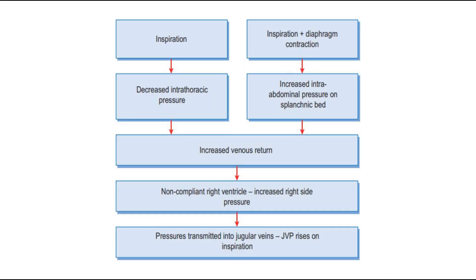This flow chart shows the mechanism of Kussmaul's sign. When the patient inspires, there is a reduction in intrathoracic pressure, hence an increase in venous return. Another mechanism is when the patient inspires together with diaphragm contraction, there is increased intra-abdominal pressure on the splanchnic bed, which increases venous return as well. The non-compliant right ventricle causes higher right-side pressure, which is then transmitted into the jugular veins. The JVP rises on inspiration, hence Kussmaul's sign is present.